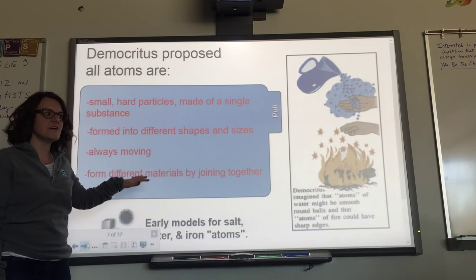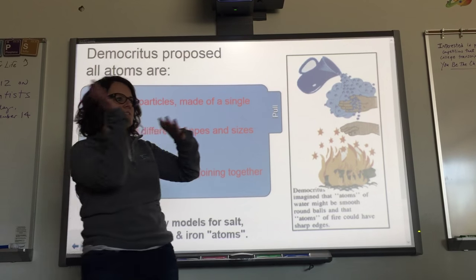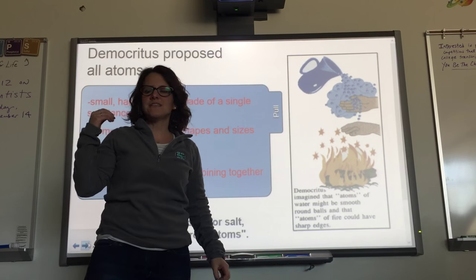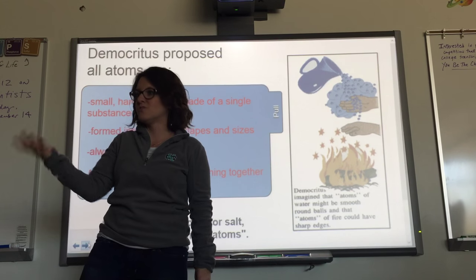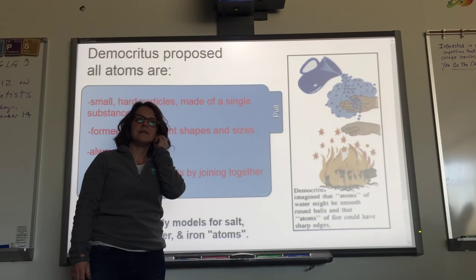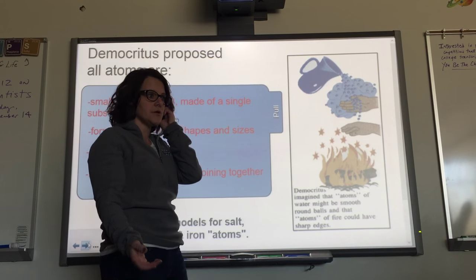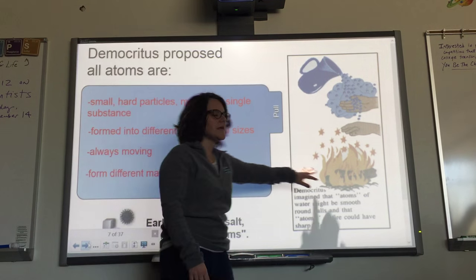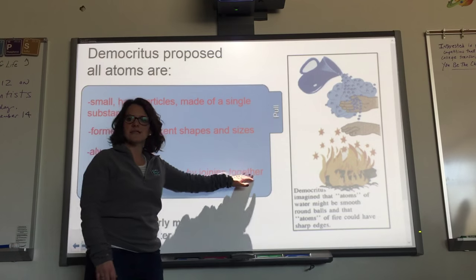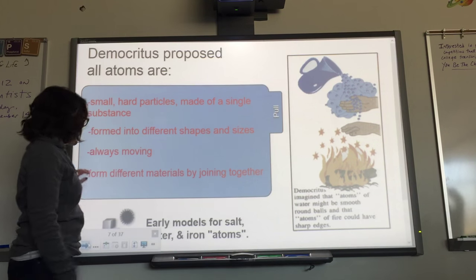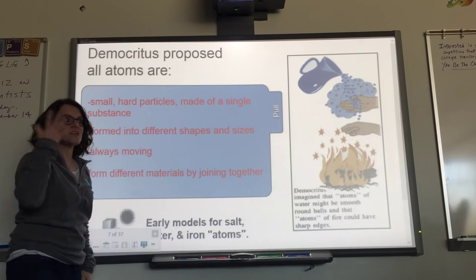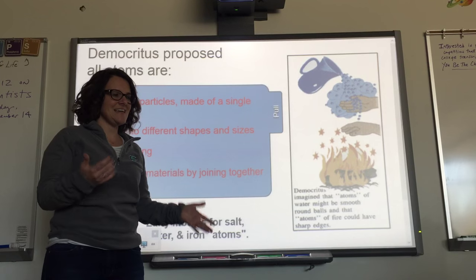He said atoms are always moving. Think about it — he's out in nature watching trees move, leaves move, rivers flow, clouds move. He's saying: if those are made up of atoms, then atoms must move too. And they form different materials by joining together. Maybe he's observing wood being burned, and at the end it doesn't look like wood anymore. He says the atoms join together to make something new. Now we know — he's talking about chemical changes and compounds.